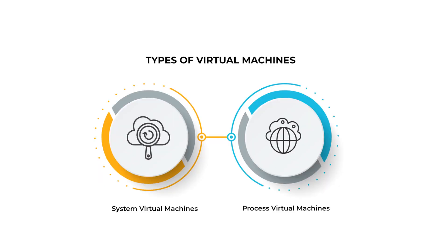We can see the types of virtual machines. There are two types: system virtual machines and process virtual machines.